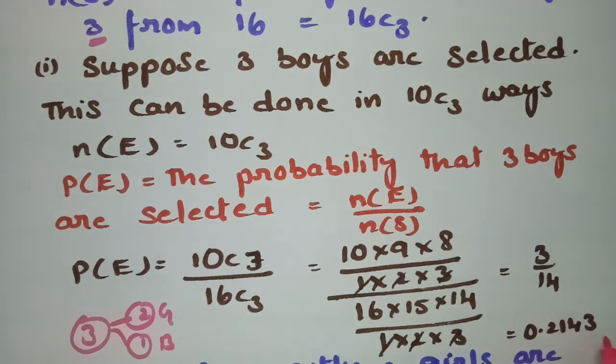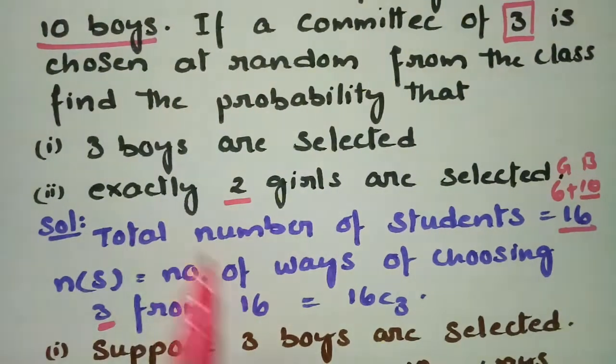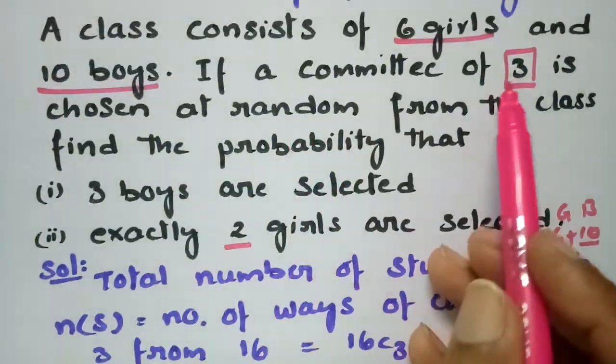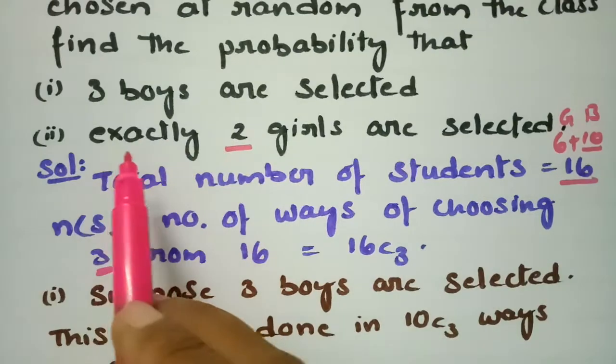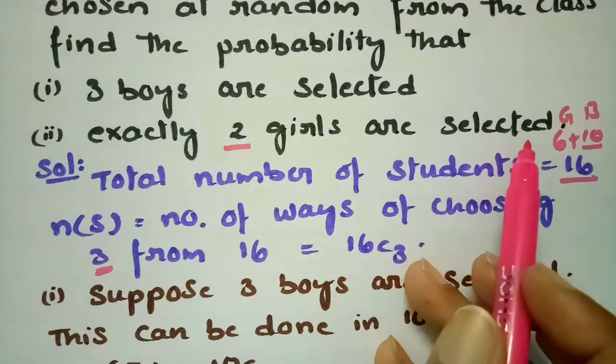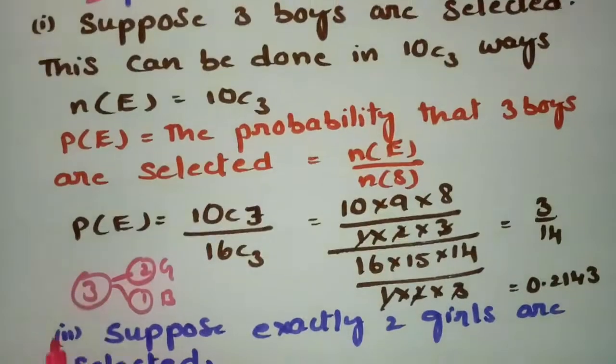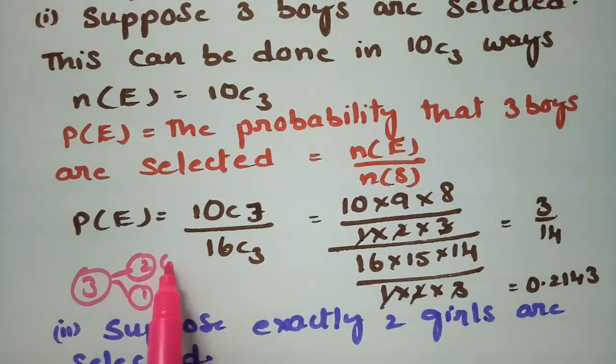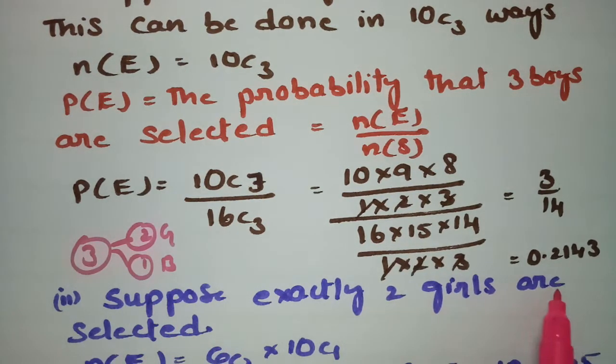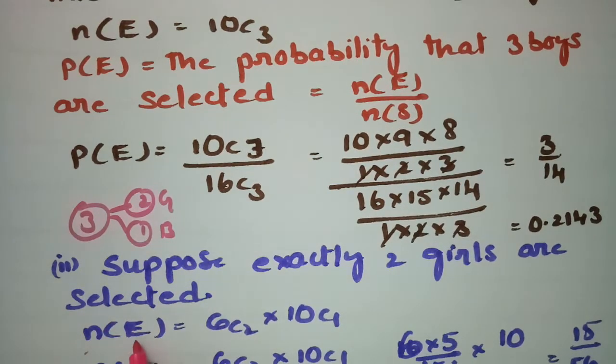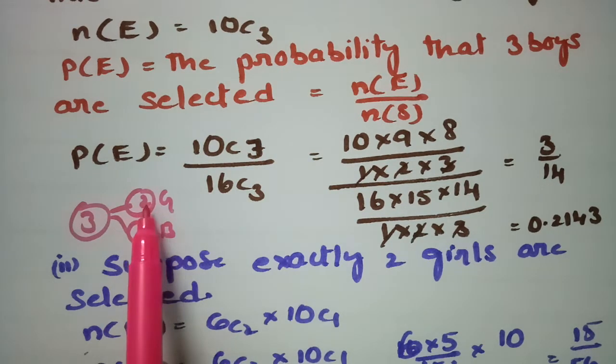Next, coming to the second question. If a committee of 3 is needed and exactly 2 girls are selected, a committee needs 3 members. If 2 are girls, the rest is a boy. Suppose exactly 2 girls are selected.